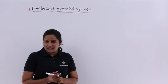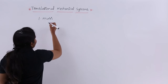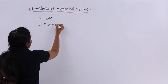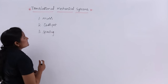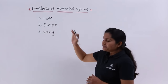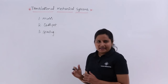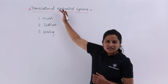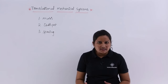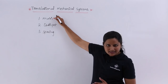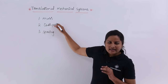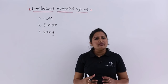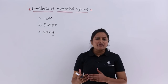There are three basic elements in a translational mechanical system: mass, dashpot, and spring. When we apply any force on any one of these three elements, we get an opposing force. The opposing force due to mass is related to acceleration, the opposing force due to dashpot is related to friction, and the opposing force due to spring is related to elasticity.